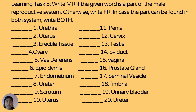For learning task number five, write MR if it is a part of the male reproductive system, FR for female reproductive system, or both if the part can be found in both systems. Items: 1 urethra, 2 uterus, 3 erectile tissue, 4 ovary, 5 vas deferens, 6 epididymis, 7 endometrium, 8 ureter, 9 scrotum, 10 uterus, 11 penis, 12 cervix, 13 testis, 14 oviduct, 15 vagina, 16 prostate gland, 17 seminal vesicle, 18 fimbria, 19 urinary bladder, and 20 ureter.